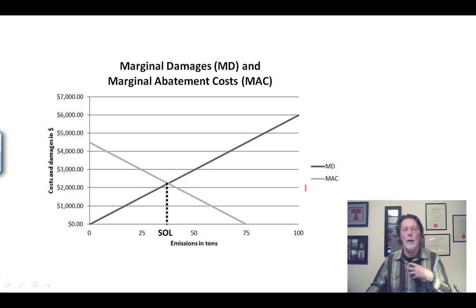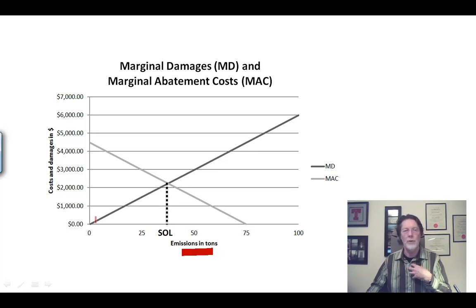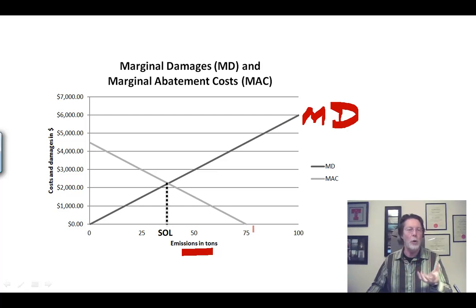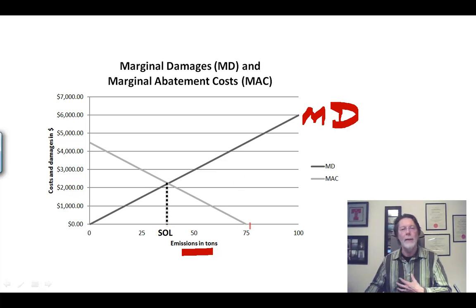Here's a picture. Emissions of pollution are along this axis and they increase in this direction. The costs and damages — the incremental costs — are measured on this scale. The marginal damages, which is this darker line, go up with emissions. And the marginal abatement costs are zero at full output when nobody's cleaning up, and they rise as the environment is cleaned up.